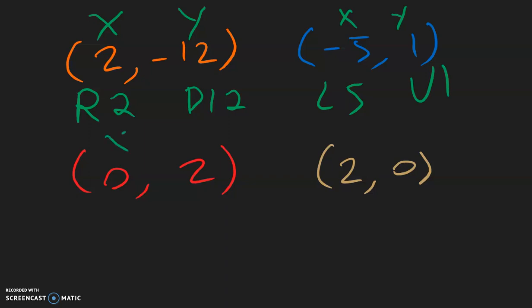Now for the red example, x is 0, so we did not move to the right nor to the left. But for the y, it did move — 2 spaces upwards, so up 2. And in contrast, this last example, the x is 2 and the y is 0. So positive 2 on the x direction, that's going to the right two spaces. And in the y direction, because it's 0, there's no move.